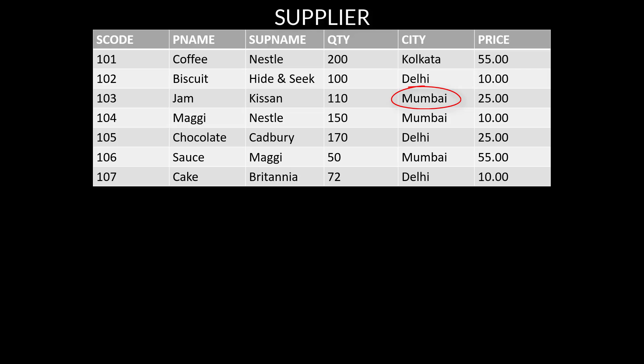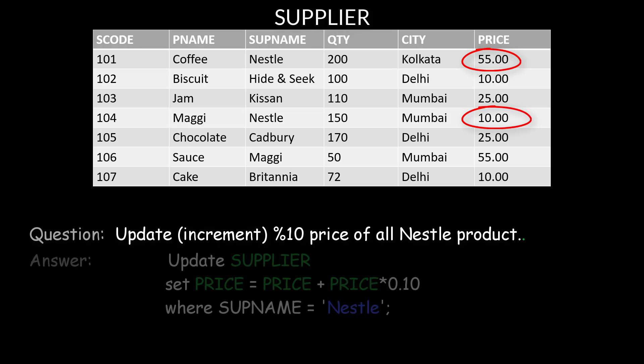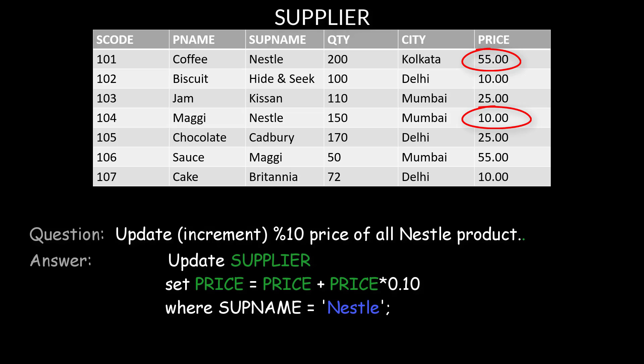One more example of the UPDATE command: suppose you want to increase the price of all Nestle products by 10 percent. The answer is: UPDATE supplier SET price = price + price * 0.10 WHERE supplier_name = 'Nestle'.